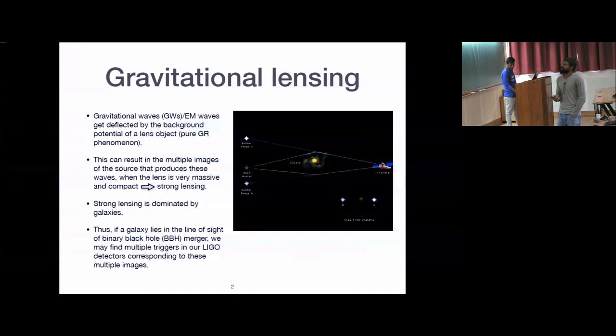So what is gravitational lensing? In a very simple setting, if you assume this Chandra telescope as an observer and this quasar as a source of electromagnetic waves—you can replace this as a source of gravitational waves—whatever I tell you for electromagnetic waves will hold for gravitational waves as well. This quasar is emitting light. You can see here the light is progressing in this direction, getting deflected back to this Chandra telescope.